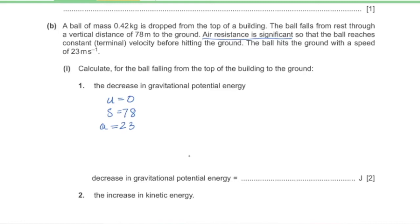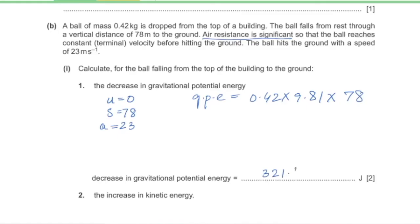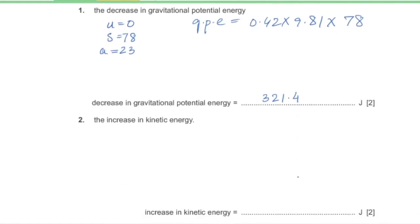Part B1: calculate the decrease in gravitational potential energy. GPE lost = mgh = 0.42 × 9.81 × 78 = 321.4 J. The increase in kinetic energy = ½mv² = ½ × 0.42 × 23² = 111.1 J.